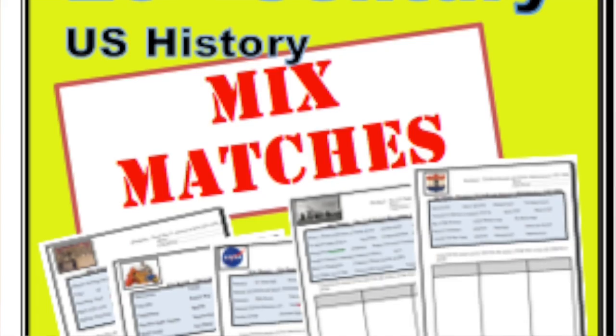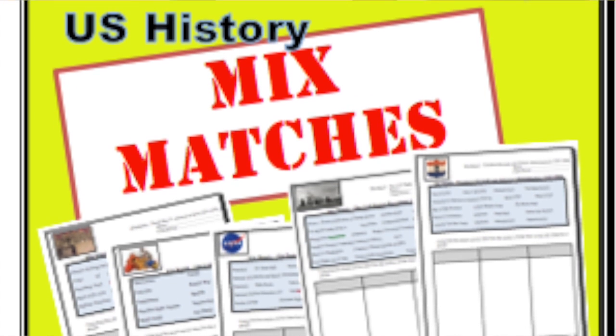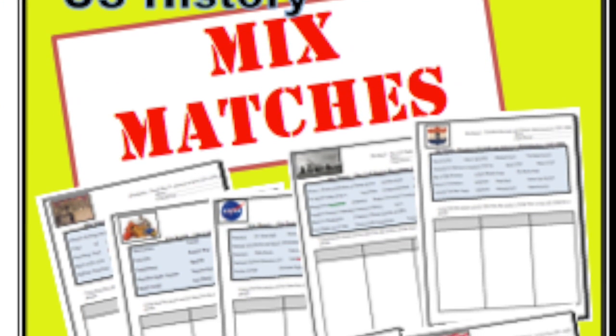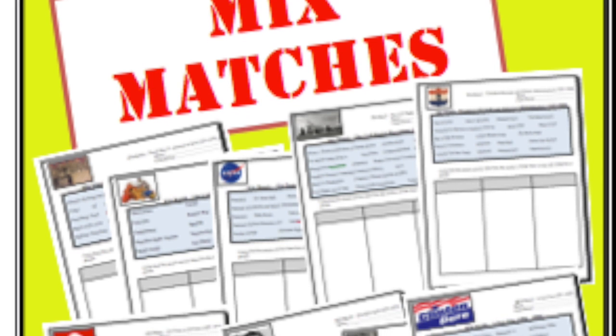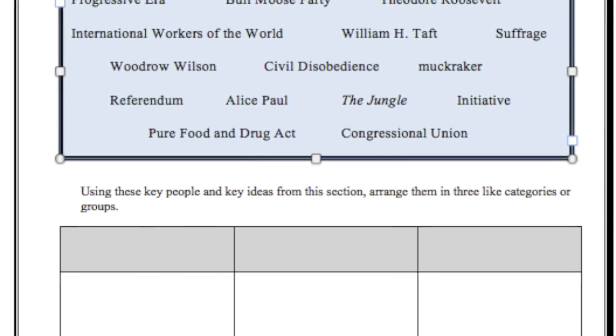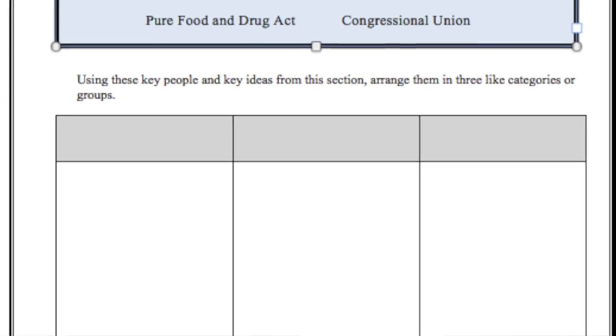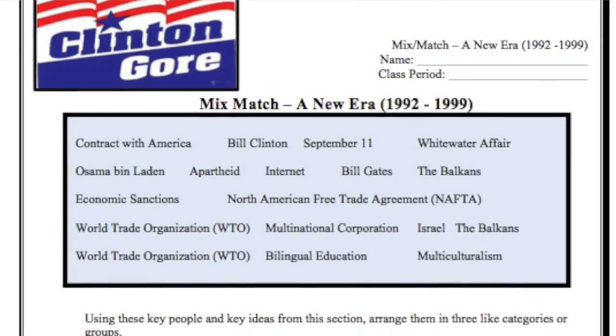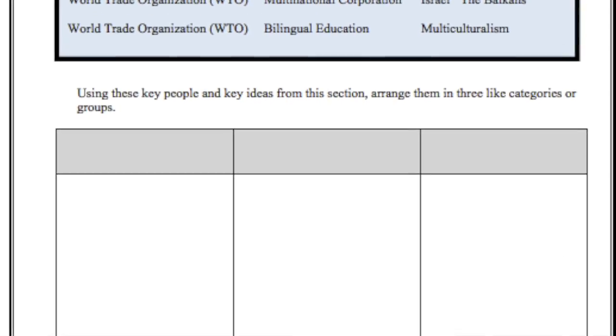So what I've done for you, to save you time, is I've created an entire 20th century unit of these mix matches. That saves you a ton of time. You can get the whole unit — there are 16 mix matches — for only $5. It starts with the Progressive unit stretching all the way to the Clinton administration. These are very useful, great ways to engage your students using mix matches.